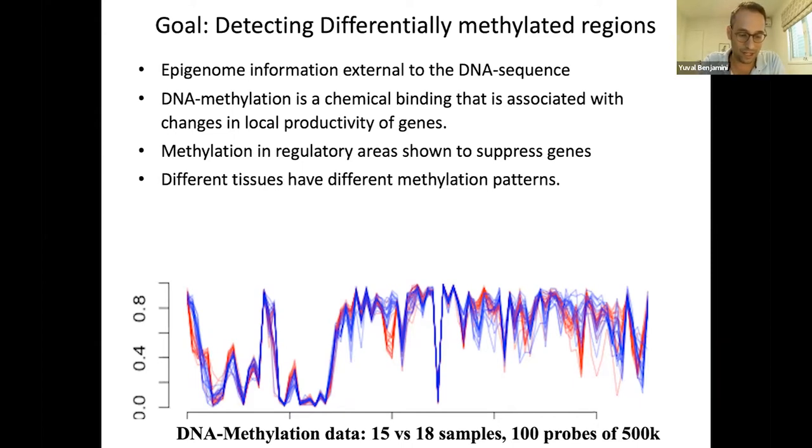Different tissues have different methylation patterns and we are interested in identifying areas where methylation is different. We see methylation at various points along the genome, wherever there's CpG sites. We look for multiple sites where there's a difference. Here I show you many samples from two types of tissues, the blue and the red. One is colon and one is oral. You can see here three consecutive probes where the red is less methylated than the blue. We might want to find this area and also ask how big is the effect.